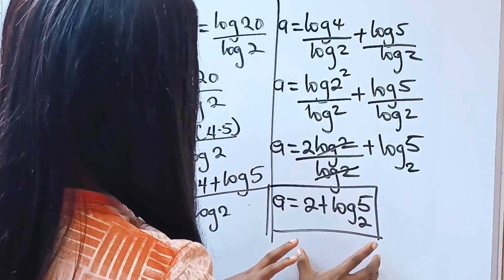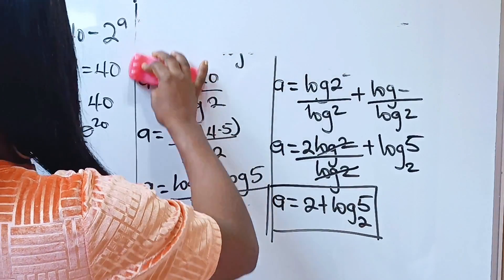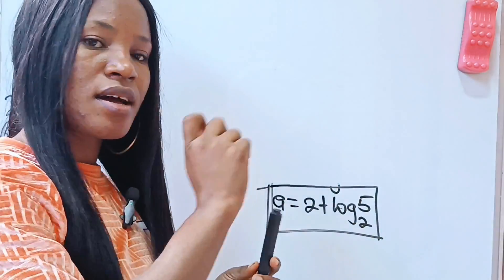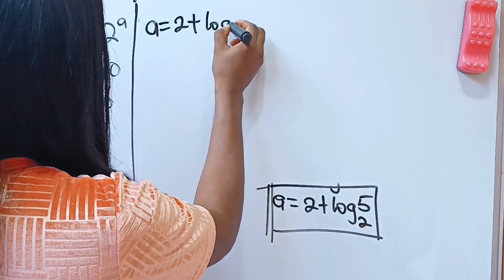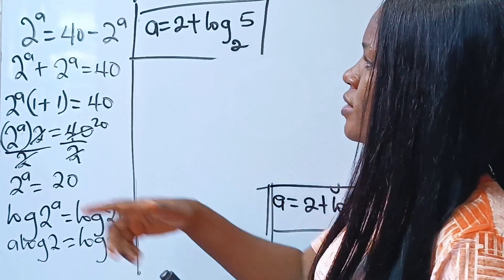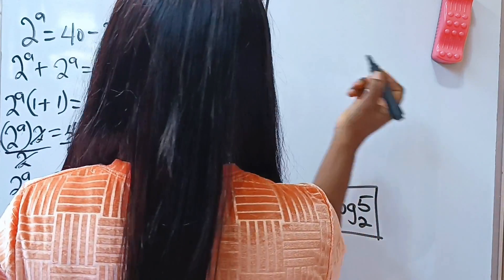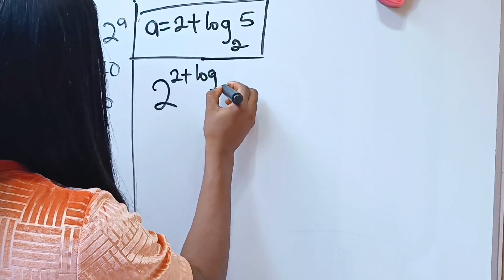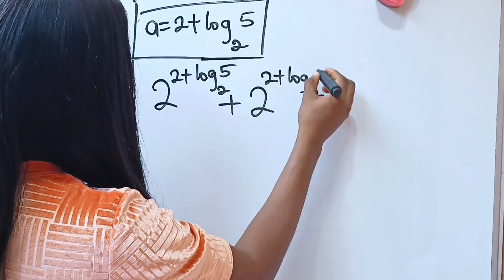Now this is our solution. Let's prove that it is right. So we have that a is 2 plus log base 2 of 5. The equation says 2 to the power of a plus 2 to the power of a is equal to 40. So let's prove that. We have 2 to the power of (2 plus log base 2 of 5), plus 2 to the power of (2 plus log base 2 of 5), equals 40.